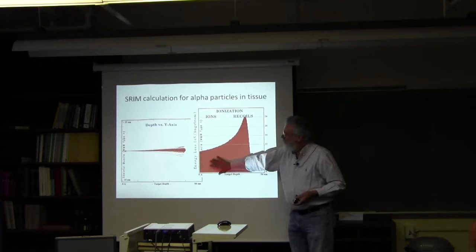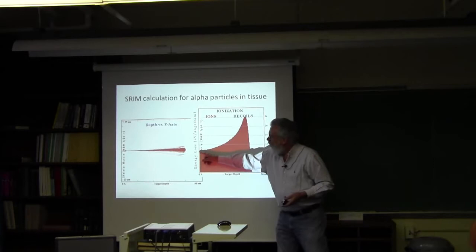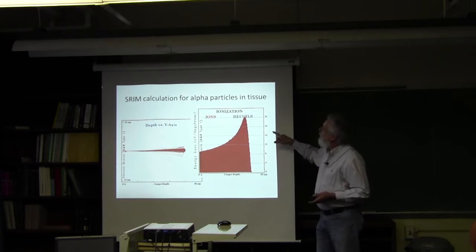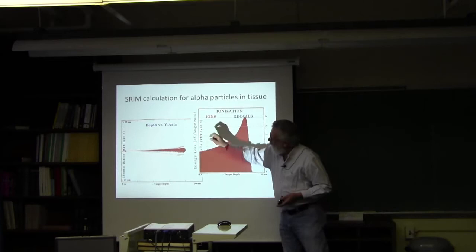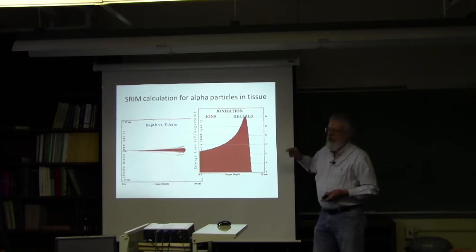This shows the way the LET changes with depth in tissue, starting with your 5 MeV particle here. This is called the Bragg curve. So what you think of is a lower LET at the entrance, it goes up and then stops this way. The units in this case are MeV per, or eV per angstrom is the units they use, but it translates directly. If you multiply this number by 10, you get the keV per micron. And so for alpha particles stopping, it's something like 240 keV per micron at the end of range.